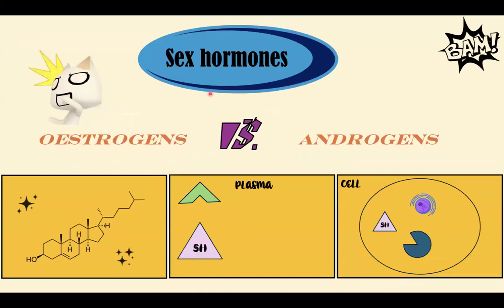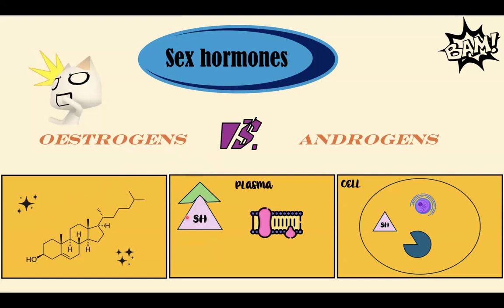Let's talk about sex hormones briefly. Sex hormones are cholesterol-based hormones, so they're lipid-soluble. Because they're lipid-soluble, they can't dissolve in plasma, which is polar. So in the plasma, they're bound to a protein known as sex hormone-binding globulin or albumin. Once this complex arrives at the cell membrane, the sex hormone detaches from the sex hormone-binding globulin and freely diffuses through the plasma membrane because it is also lipophilic.